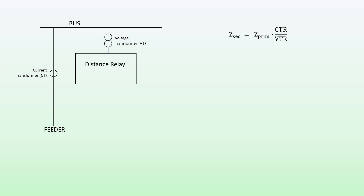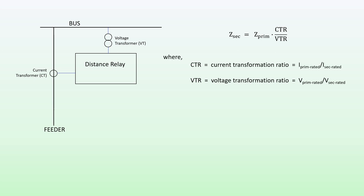What I'm going to demonstrate is that the secondary impedance — that is, the impedance as seen by the relay, or the measured impedance — is equal to the primary impedance times the CT ratio divided by the VT ratio constant. The CT ratio is the rated primary current of the CT divided by the rated secondary current, and similarly the voltage transformation ratio is the rated primary voltage divided by the rated secondary voltage of our VT.